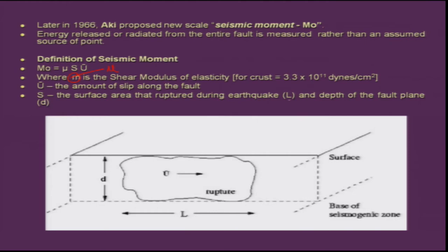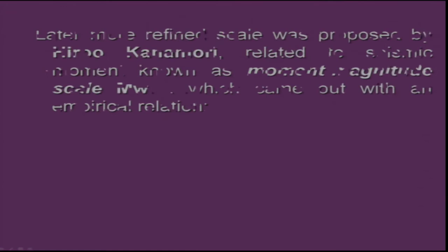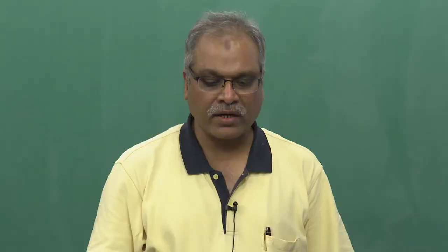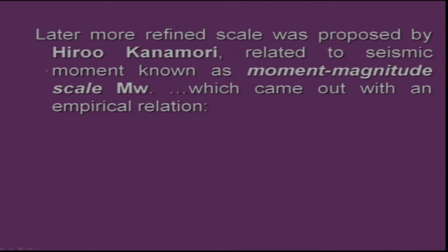The length L and the depth of the fault plane give you the total rupture area combined with the slip. Based on that, Mo is calculated, and that helps in determining the moment magnitude. This was proposed later as a more refined scale by Kanamori, related to seismic moment and known as moment magnitude.